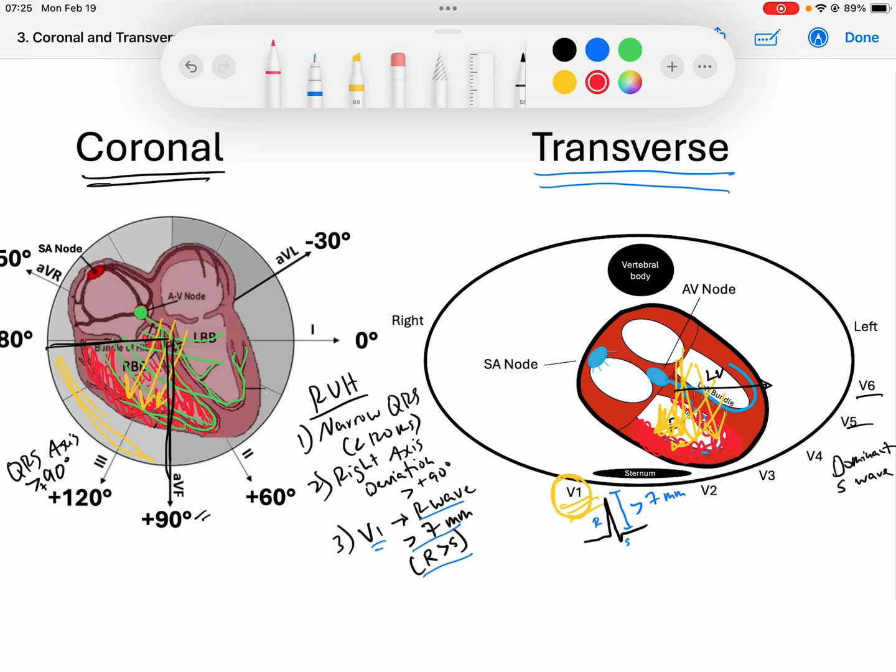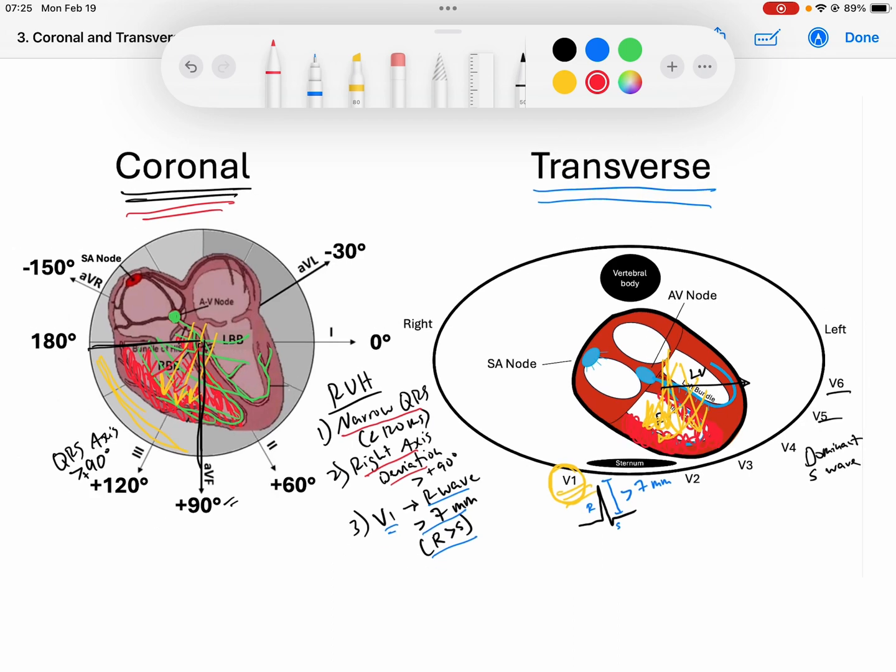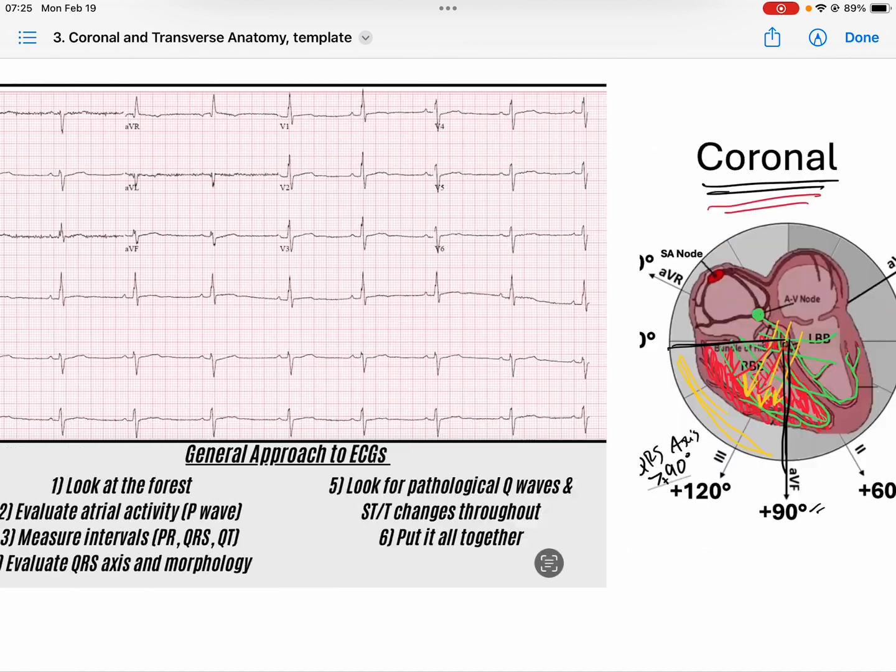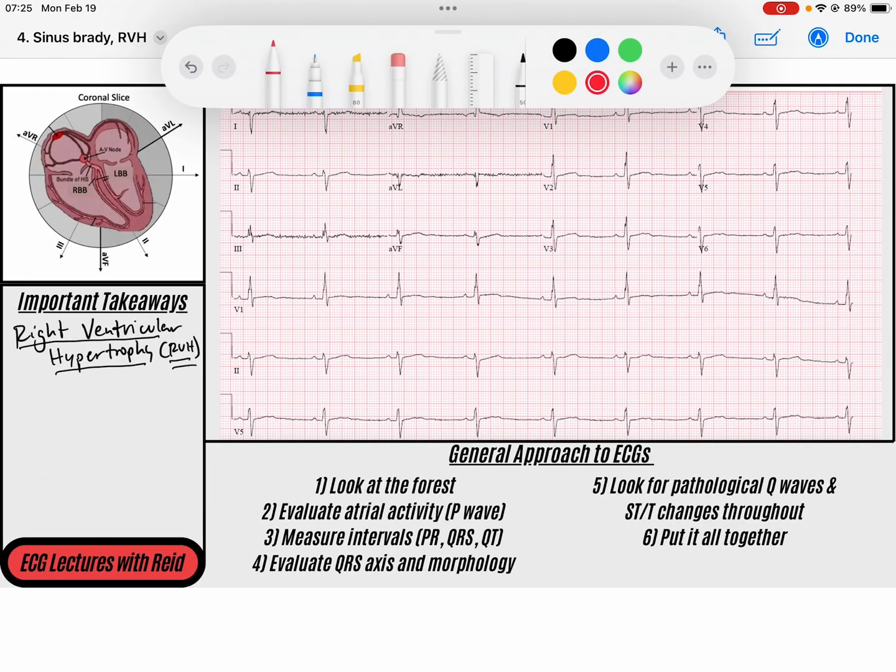Remember that we must have a narrow QRS complex because our His-Purkinje system, the highway system that conducts our QRS, is still functioning. We should have a narrow QRS that's less than 120 milliseconds, and we should have right axis deviation on our limb leads because our signal is favoring the right ventricle.